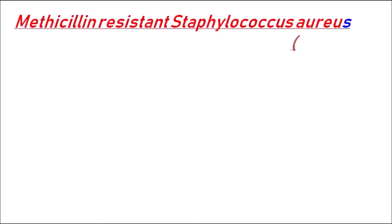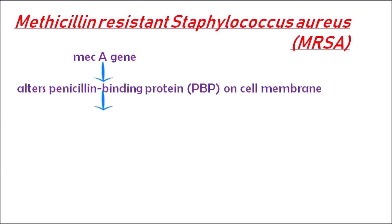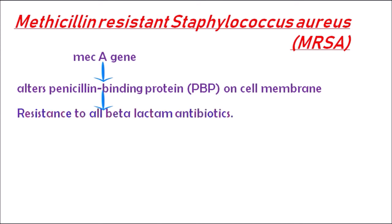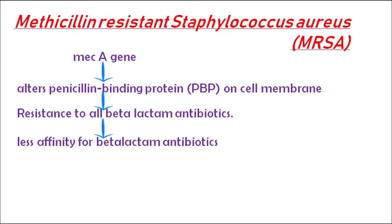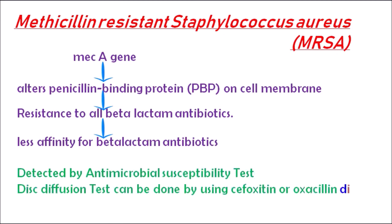Now let's discuss methicillin-resistant Staphylococcus aureus or MRSA. The MECA gene causes alteration of the penicillin-binding protein on the cell membrane, due to which beta-lactam antibiotics cannot bind, causing resistance to all beta-lactam antibiotics like penicillins. This can be detected by antimicrobial susceptibility testing using the disc diffusion test with cefoxitin or oxacillin discs.